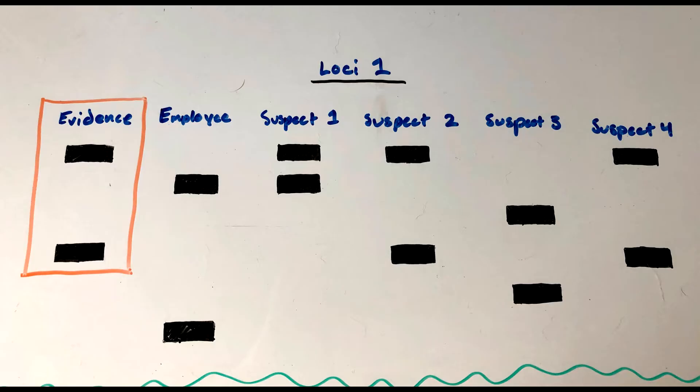In order for the DNA to be considered the same as the DNA from the evidence, the bar positions must match at both loci. Each bar represents an allele.